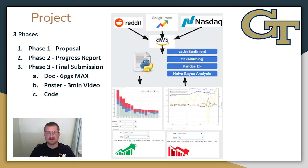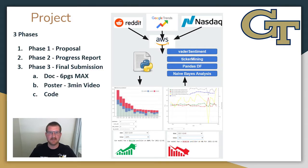Phase three is the final submission, made up of three things: a document, a poster, and the code for your actual project. The document is six pages long and is fairly similar to the progress report, with the additional parts your team has completed filled in. The poster is a single slide explaining your project, and each student must make their own three-minute video based on the poster. Finally, the code is what the TA will run to check your project, and you need a readme on how to run it. For my team's project, we developed a sentiment indicator for stocks that took sentiment data from multiple Reddit threads, Google Trends data, and data from the NASDAQ, and scored it as positive or negative. A time series of the scored sentiment was then used with a naive Bayes analysis to predict bearish or bullish trends for different stocks. A pipeline of our system can be seen here, and for our team the project was successful.